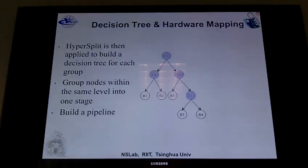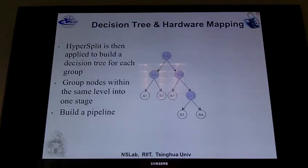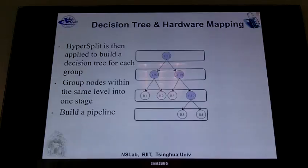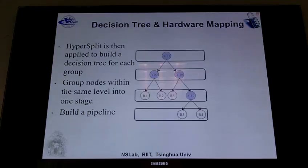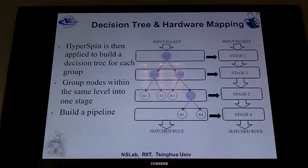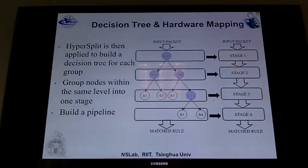After grouping, I apply Hypersplit to build the decision tree for each group, and do hardware mapping by grouping nodes within the same level into one stage. The decision tree maps well into hardware as a pipeline, because each stage does a very simple thing: it takes information from the previous stage — generally just a pointer — and does a comparison. For example, the input packet coming in does a simple comparison on dimension x, and depending on whether it is greater than a certain value, it gives a pointer to the left or right. At the end you get the matching rule.